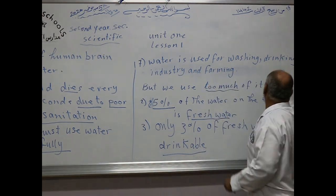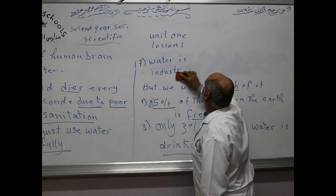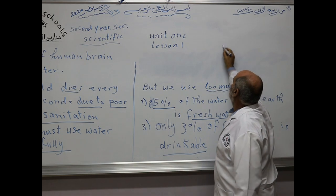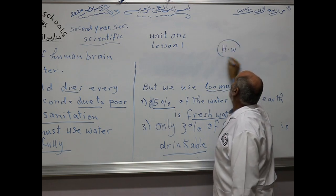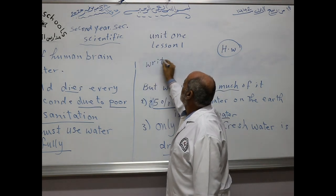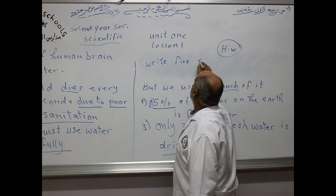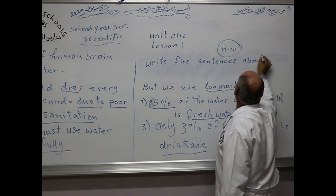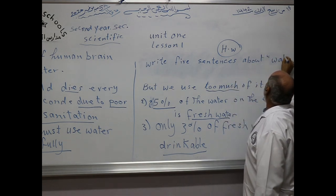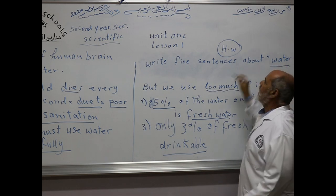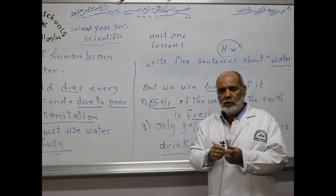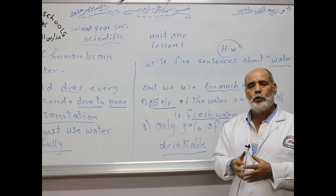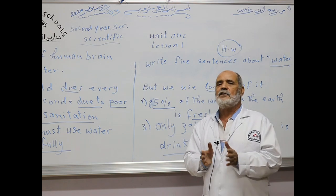For homework: write five sentences about water. You can write about the kinds of water, the importance of water, how we use water, and what we should do with water. Thank you. This is lesson number one.